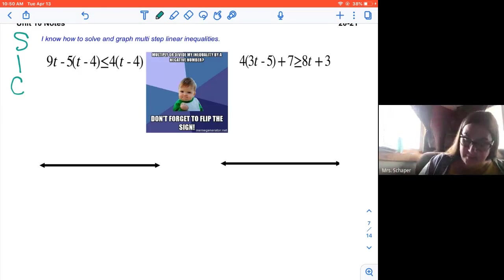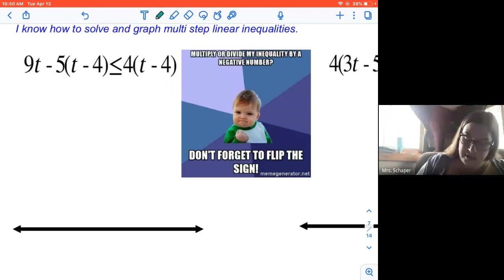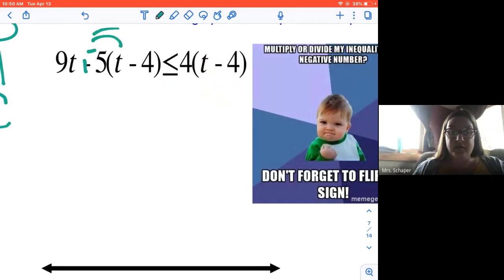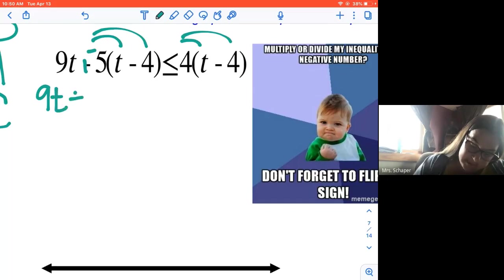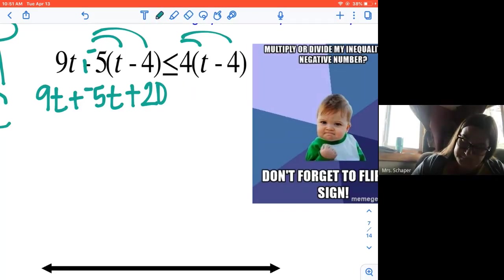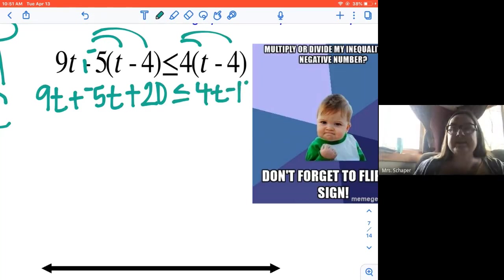So with this first example, I'm going to make it a little bit bigger here. I'm going to add up and I'm going to distribute that negative 5 and then I have to distribute the 4. So 9t plus negative 5t plus 20 because negative 5 times negative 4, negative times negative is positive.